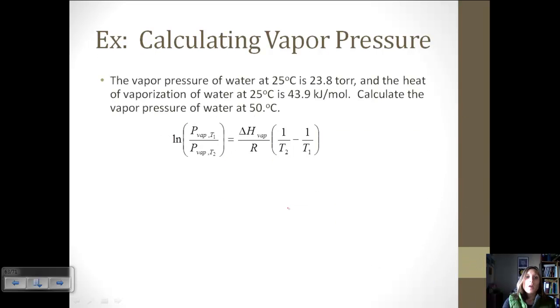Let's say we want to calculate a new vapor pressure based on information that we know. We know the vapor pressure of water at 25 Celsius is 23.8 torr. And we know the heat of vaporization, that delta H, is 43.9 kilojoules per mole. So, we want to calculate the vapor pressure of water at a new temperature at 50 Celsius. Make sure that we're using this equation to relate those two temperatures and pressures to each other.